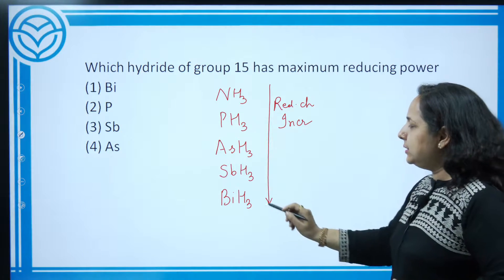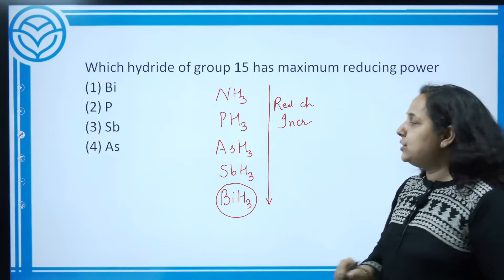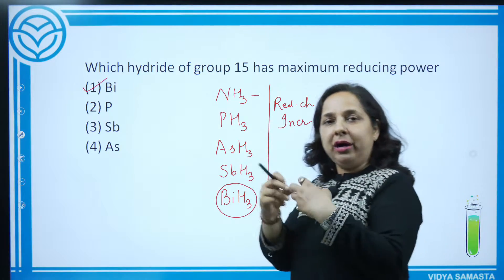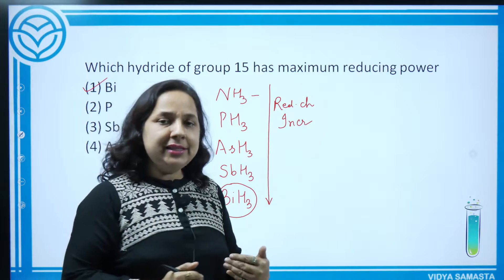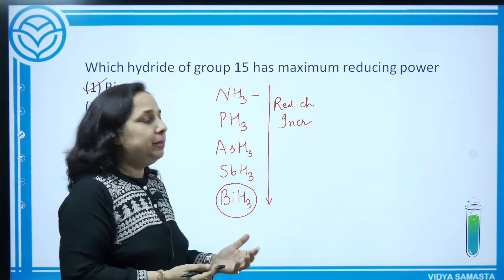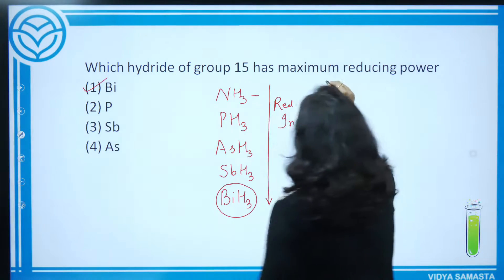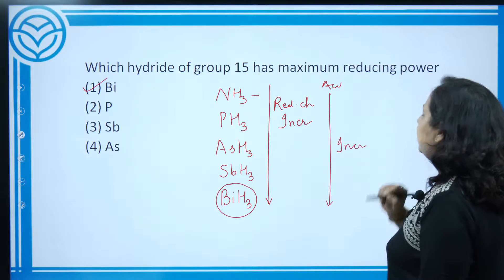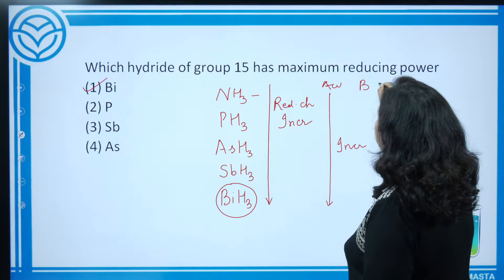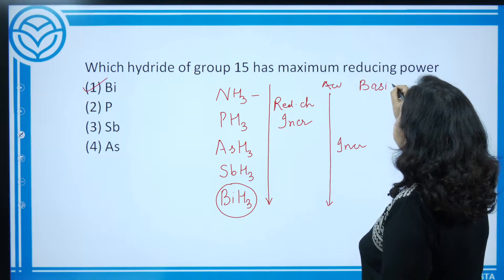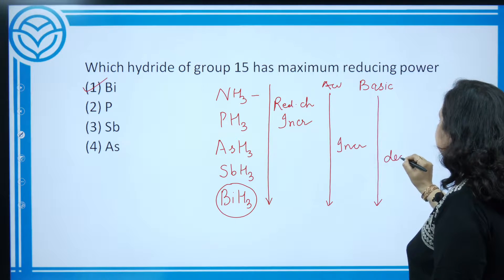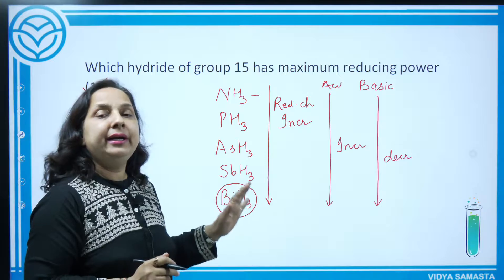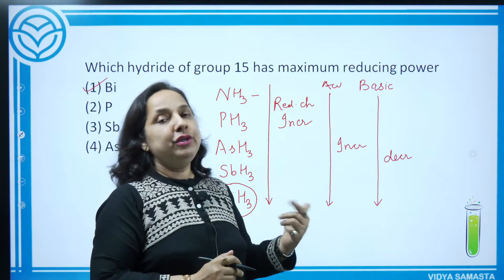Since reducing character increases down the group, the best reducing agent is BiH₃ (bismuth). This is because bond length increases down the group — larger bond length means the bond is easier to break, so bond dissociation is easier, making it a better reducing agent. If acidic character were asked, the order would also increase downward; basic character decreases down the group. These orders are very important for P-block.